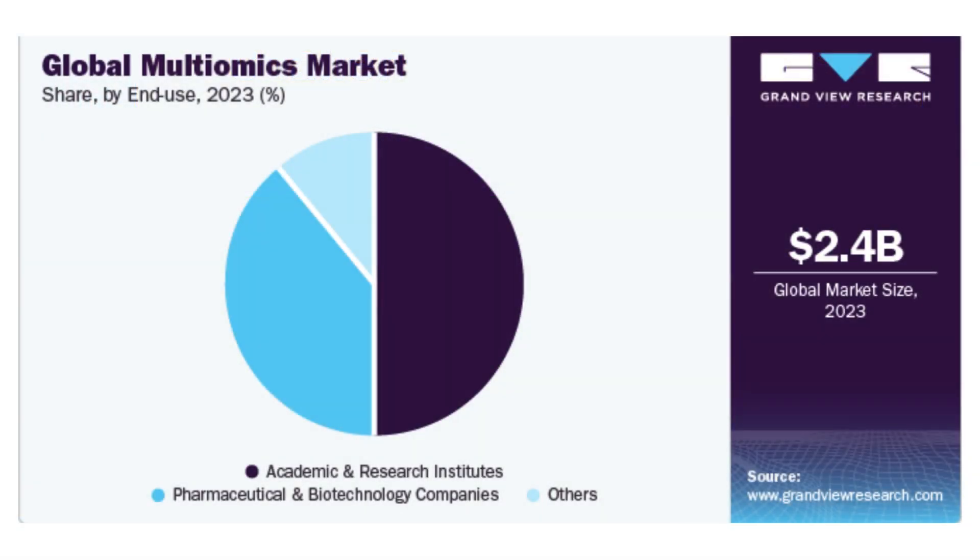As you can see here, the global Multiomics market was valued at a substantial $2.4 billion in 2023. The pie chart breaks down the market share by end use — academic and research institutes currently hold the largest share, followed by pharmaceutical and biotech companies, with a small portion attributed to other users.